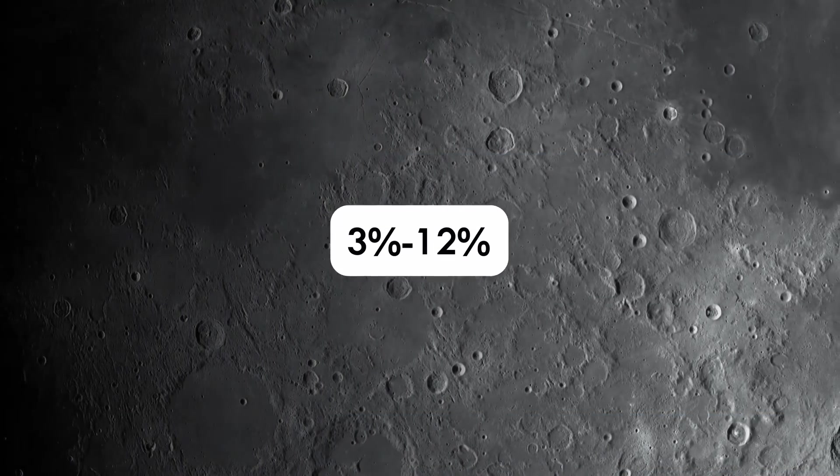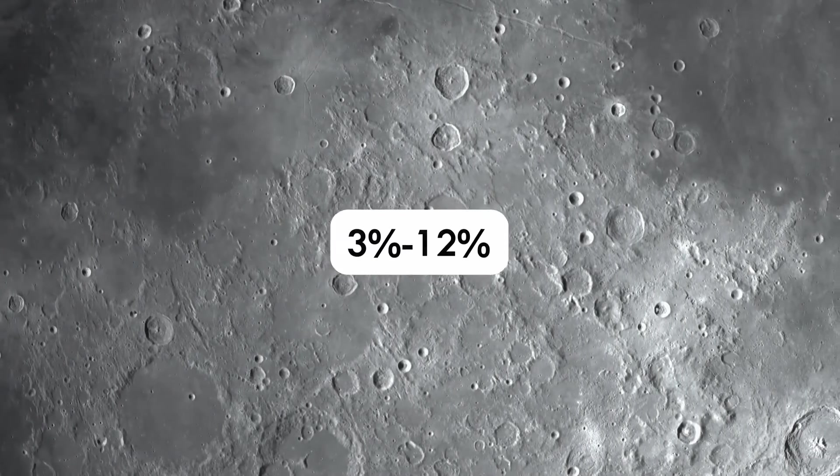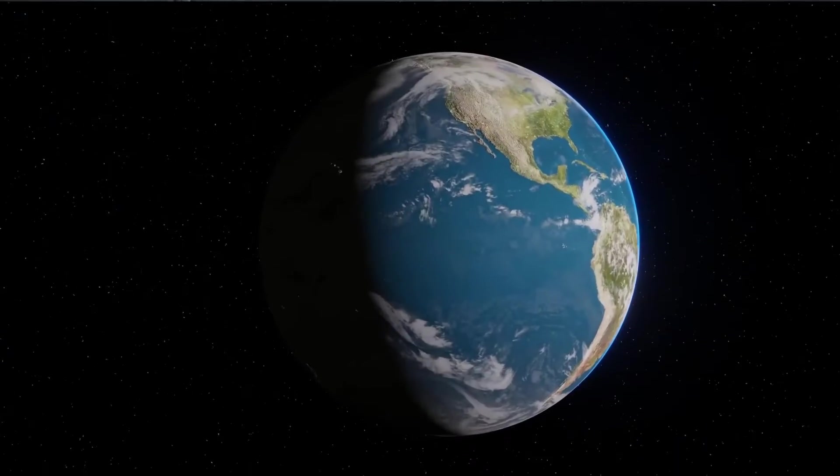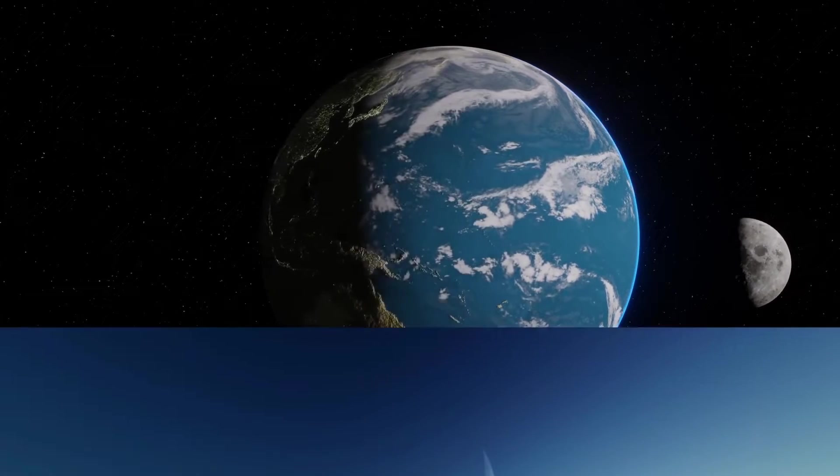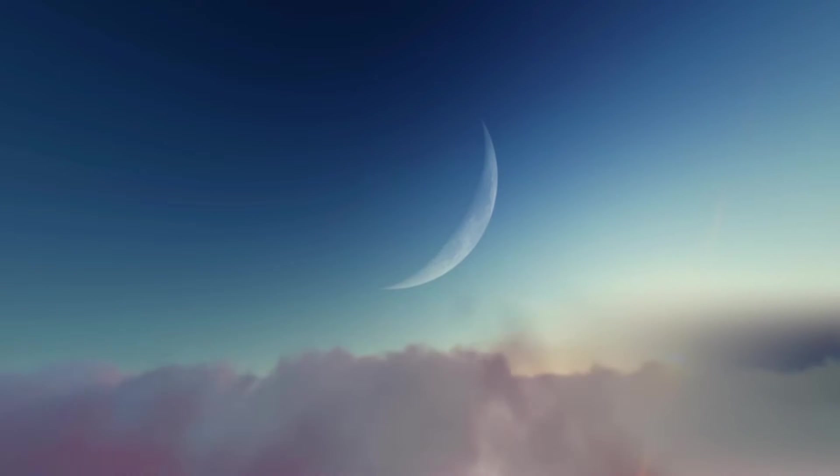Only 3 to 12% of the sunlight hitting the lunar surface is actually reflected. However, owing to its close proximity to the Earth and its significant size, even this fraction of reflected light is bright enough to make the Moon visible during the day.